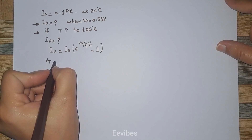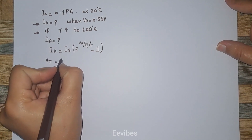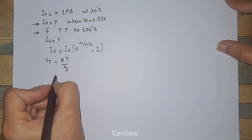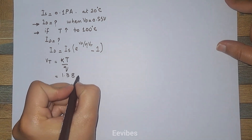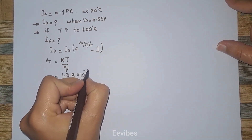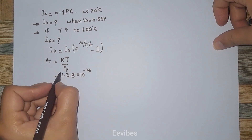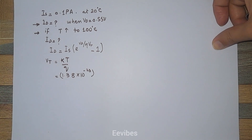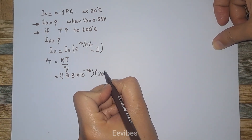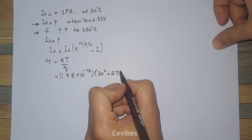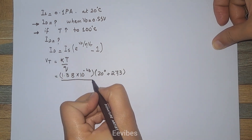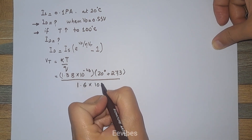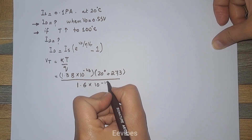The thermal voltage is determined using the formula VT = kT/Q, where k is the Boltzmann constant with a value of 1.38 × 10^(−23) joules per Kelvin. The temperature is always represented in Kelvin, so 20 degrees plus 273 is added to convert it to Kelvin. The charge on the electron is equal to 1.6 × 10^(−19) coulombs.